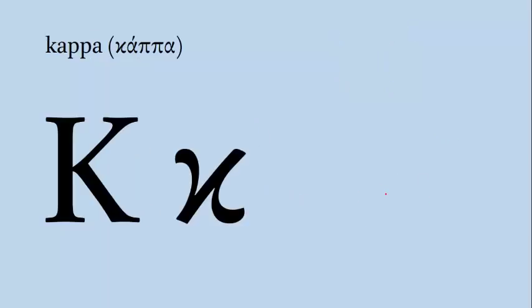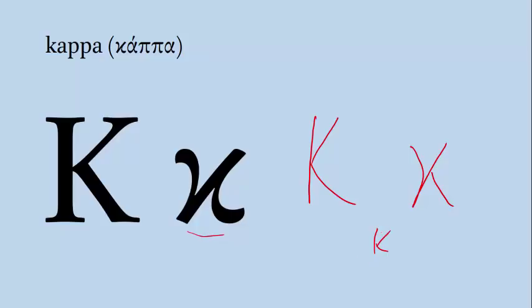Our next letter is Kappa, which corresponds roughly to the English letter K or that hard C — never a soft C, but always a hard C that makes the K sound as in 'cat.' We draw Kappa sort of just like an English letter K. For uppercase, just draw the letter K. For lowercase, I tend to draw my lowercase Kappas just as a small letter K that comes only halfway up the line. A Greek word with Kappa is the word 'hekaton,' which means 100.